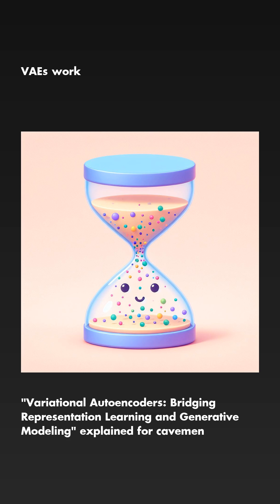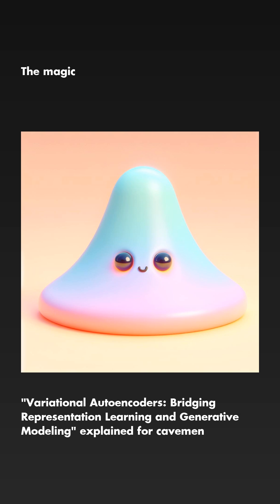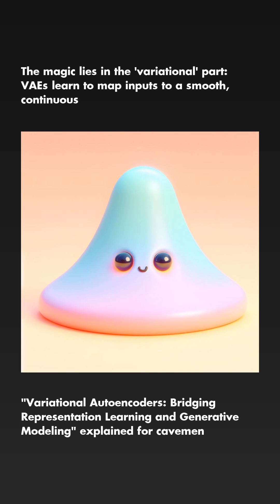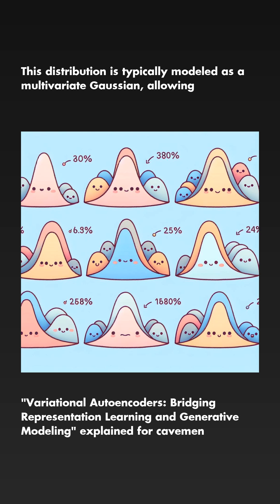VAEs work by encoding input data into a compact latent space, then decoding it back while adding a dash of randomness. The magic lies in the variational part: VAEs learn to map inputs to a smooth, continuous distribution in latent space. This distribution is typically modeled as a multivariate Gaussian, allowing for easy sampling and manipulation.